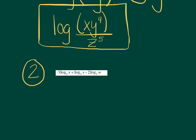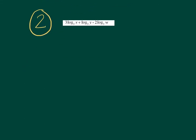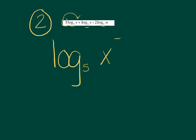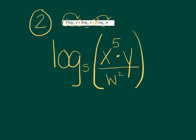Number 2, same idea — condensing into one log. I count three logs to begin with. Reading left to right: the 3 in front came from the exponent, so I have log base 5 of x to the third. The plus sign turns to multiplication, so times y. The minus sign tells me to divide, and the number in front goes to the exponent: divided by w squared. And there you have it — condensing several logs into one log.